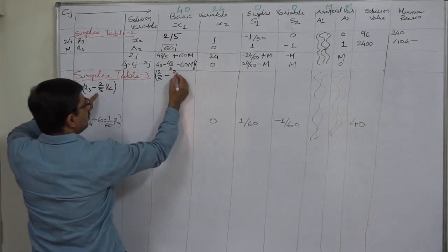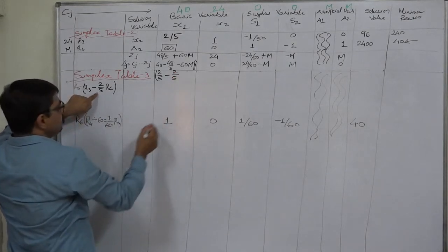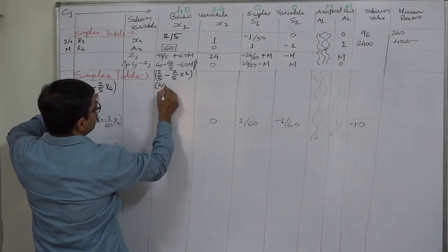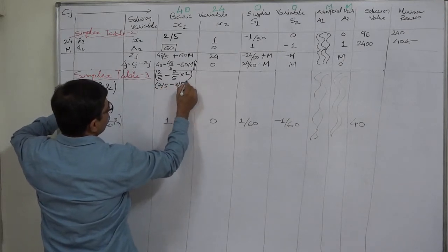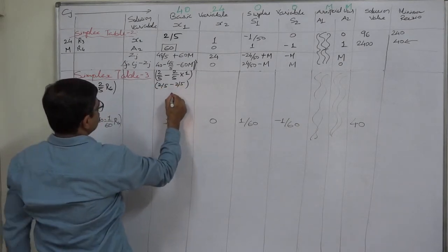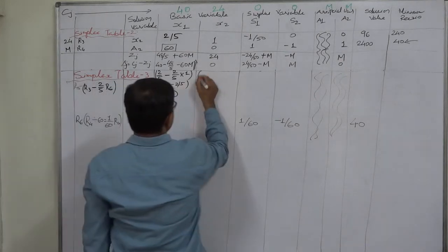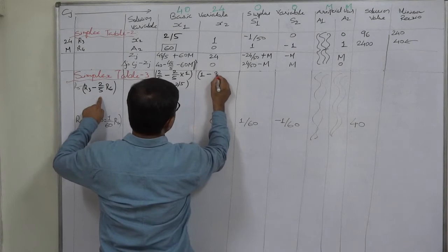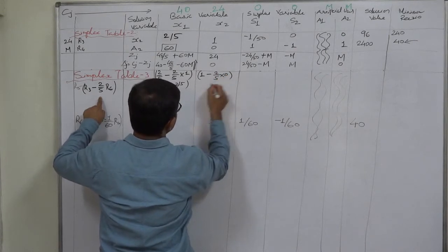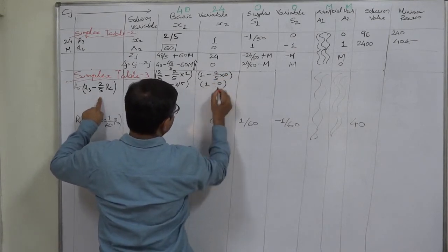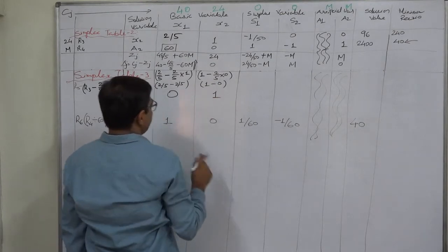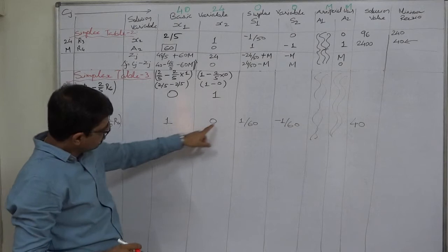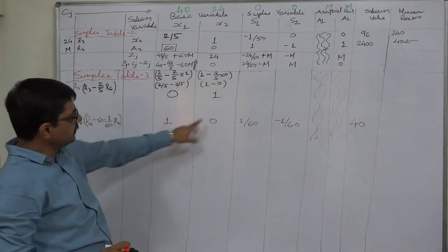Calculating R5: R3 is 2/5, minus 2/5 (from formula) times R6 which is 1, so 2/5 − 2/5 = 0. Next element: R3 is 1, minus (2/5) × 0 = 0, so 1 − 0 = 1. Since we have obtained the unit matrix here in these positions, it may seem like we have the optimal solution.